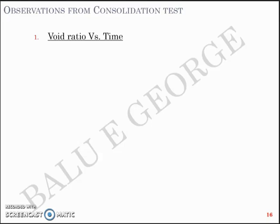Good morning all. In the previous couple of videos we have been discussing the consolidation test, its readings, and how to get the coefficient of consolidation using the logarithm of time method and the square root of time method. Before that we had discussed how to conduct the one-dimensional consolidation test in the laboratory, where the readings obtained are the dial gauge reading and the time taken. From these two readings we discussed how to arrive at the coefficient of consolidation cv by the root of time method and the log of time method.